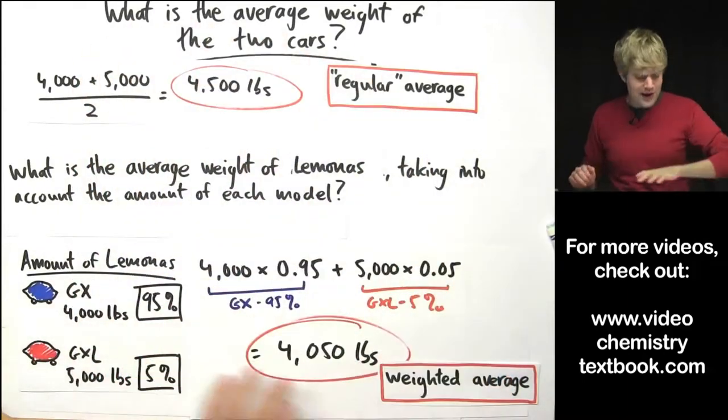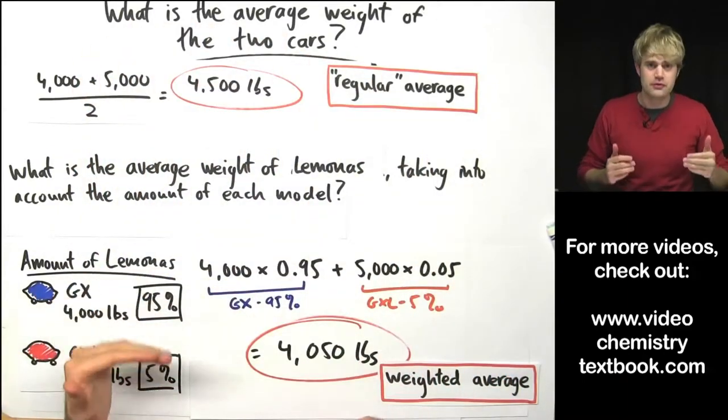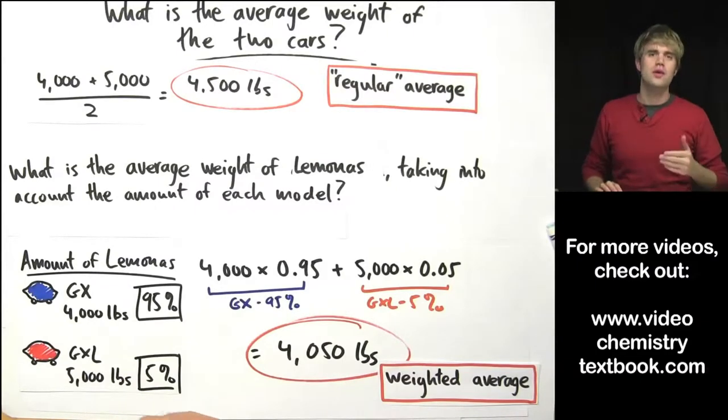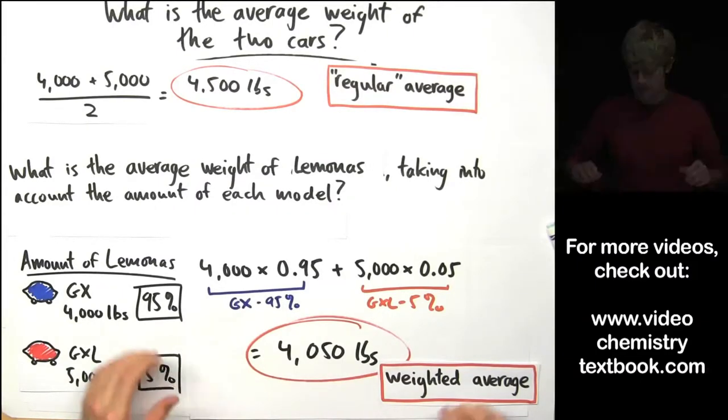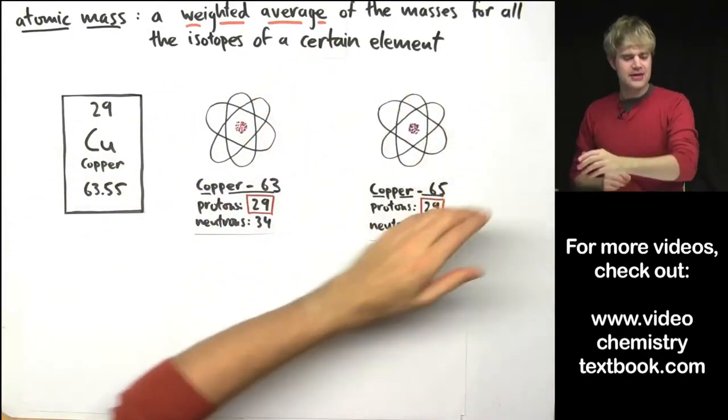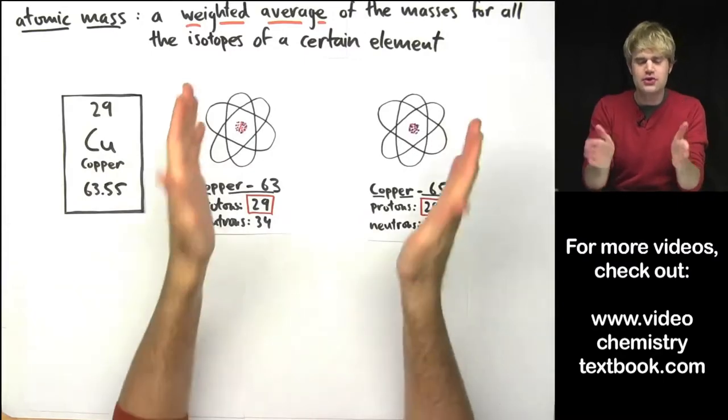So now that we've learned how to do weighted averages with different types of cars, let's talk about how to do weighted averages with different isotopes of an element. The atomic mass is a weighted average of the masses for all the isotopes of a certain element.